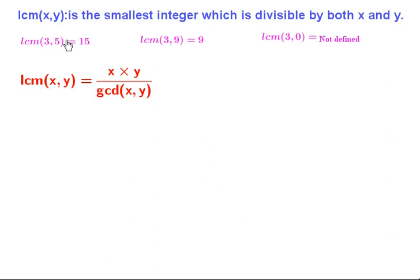This approach requires a lot of computation — in the worst case you need to perform x times y operations. So the question is: can we do better? The answer is yes. We will first establish the relation between LCM and GCD, prove it is true, and then implement it in Python. The relation is: LCM(x, y) = x times y divided by GCD(x, y).